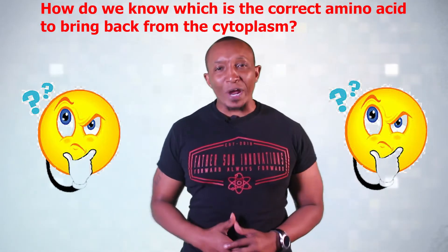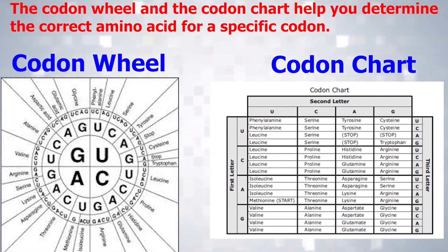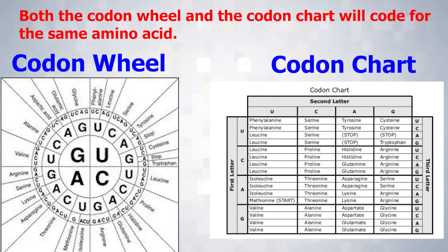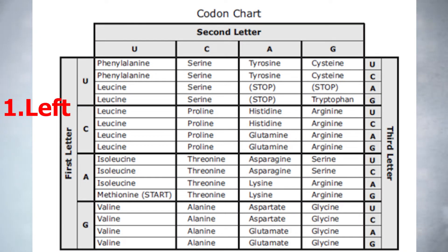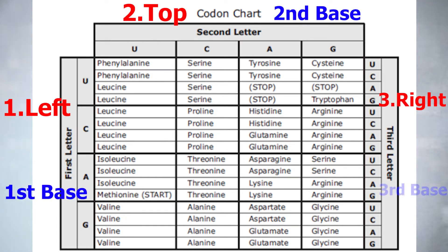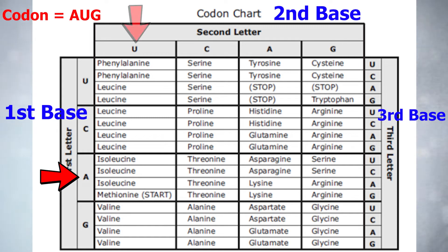But how do we know which is the correct amino acid to bring back from the cytoplasm? That's a great question, and now we introduce the codon wheel and codon chart. Most students like using the codon wheel because they say it's easier to read, but both types will code for the same amino acid. We'll use the first codon AUG as an example. Let's use our codon chart first. I like to tell my students to read it as left, top, right — or first base, second base, and third base — and draw a line where all three will meet. We start on the left side or first base with A, then move to the top or second base with U, then to the right or third base with G. Once we have located all three, draw a line to match where all three meet, and that will tell you your amino acid, which is methionine.